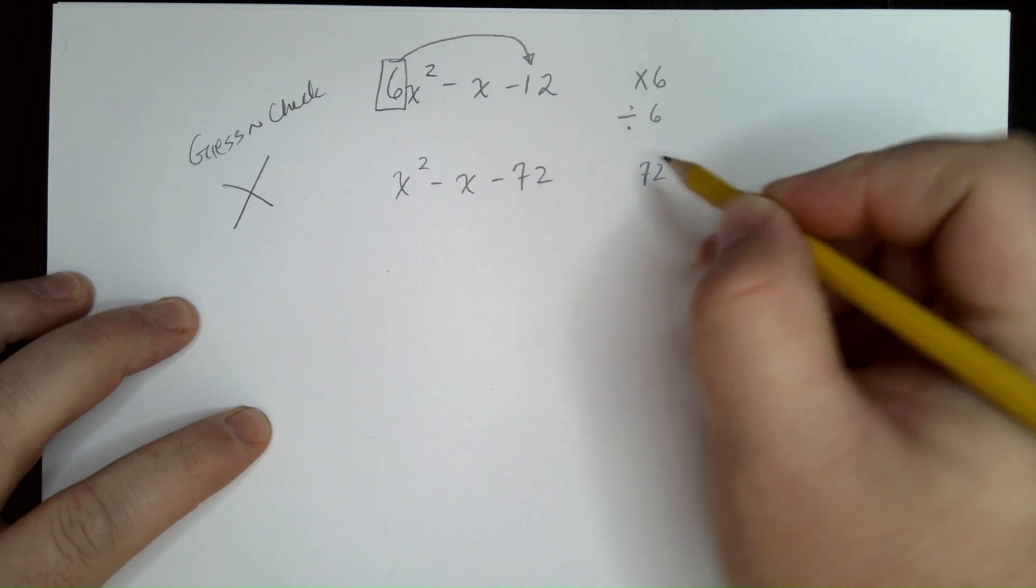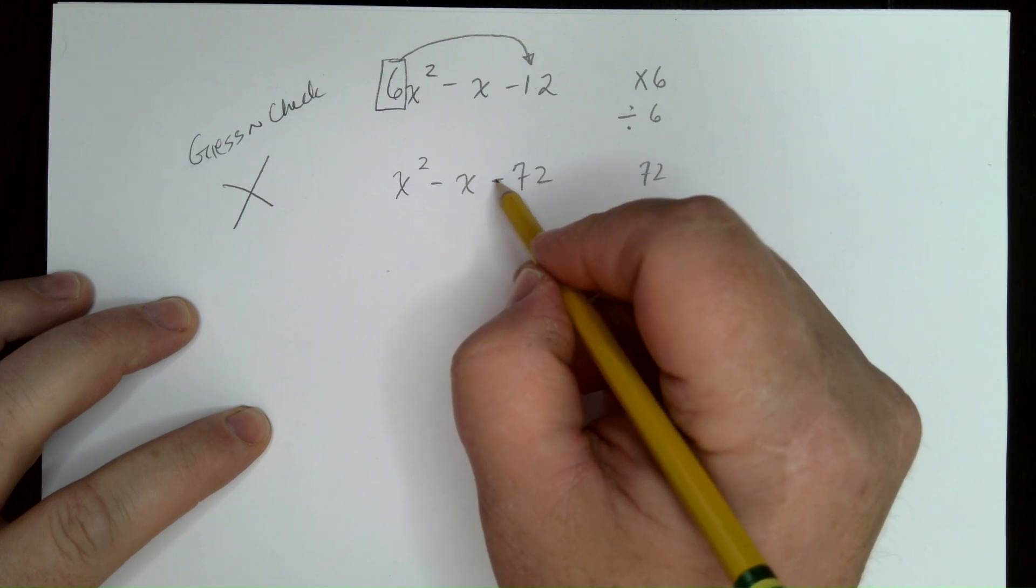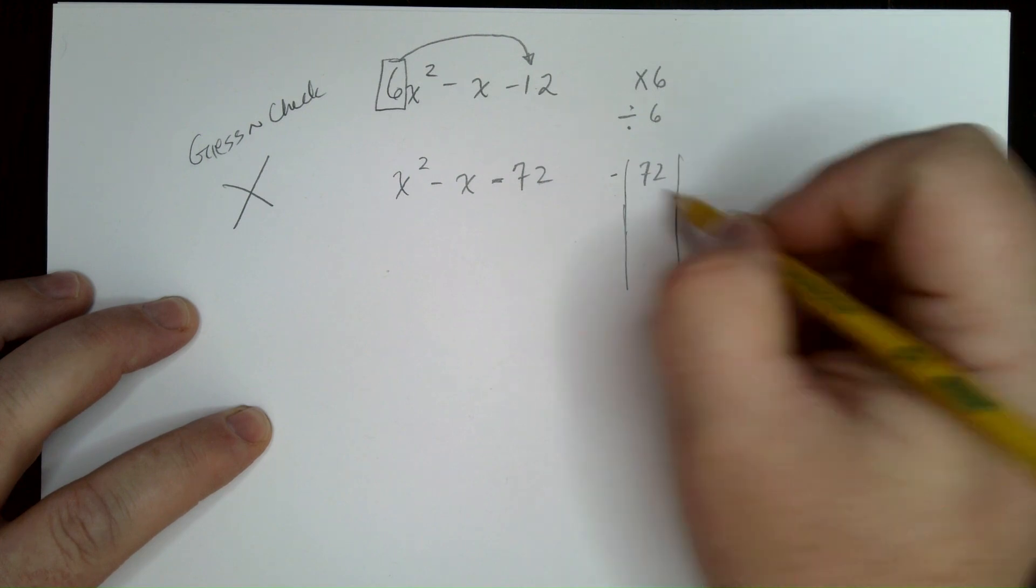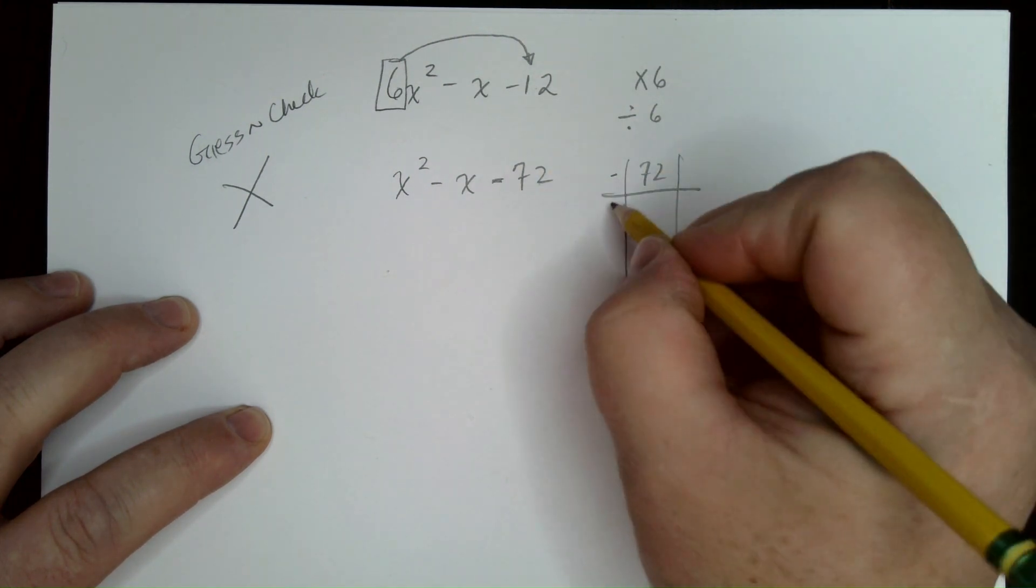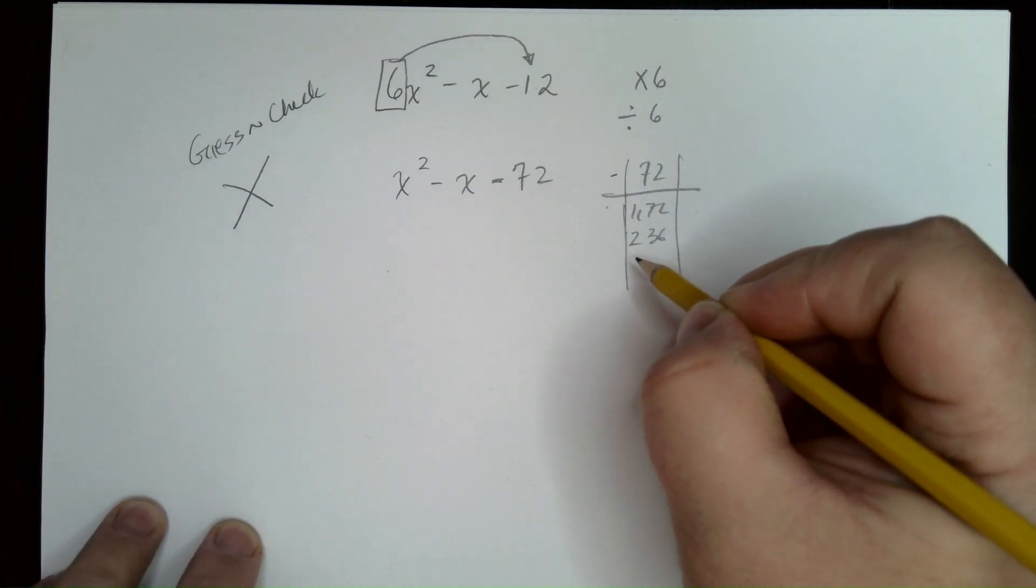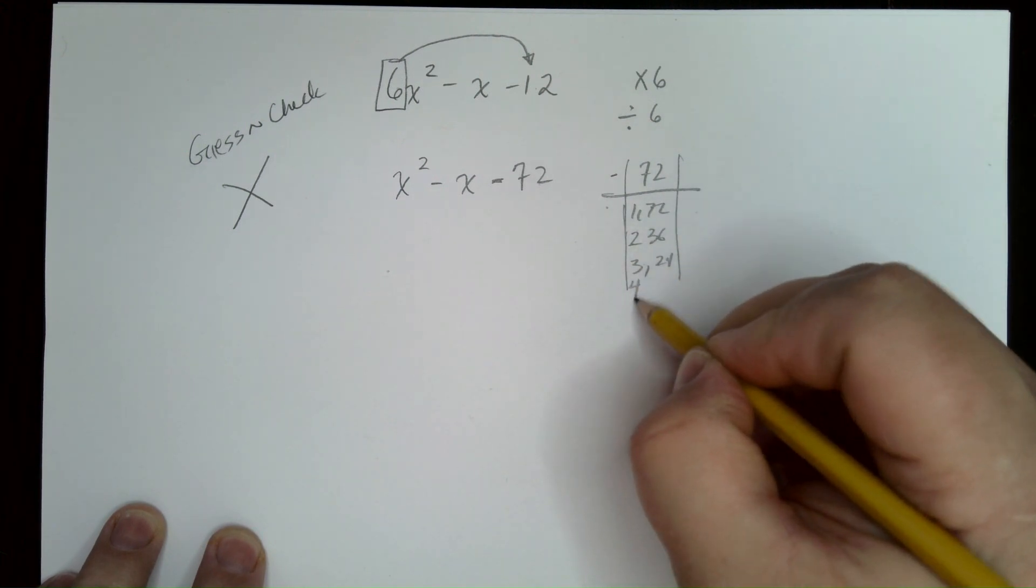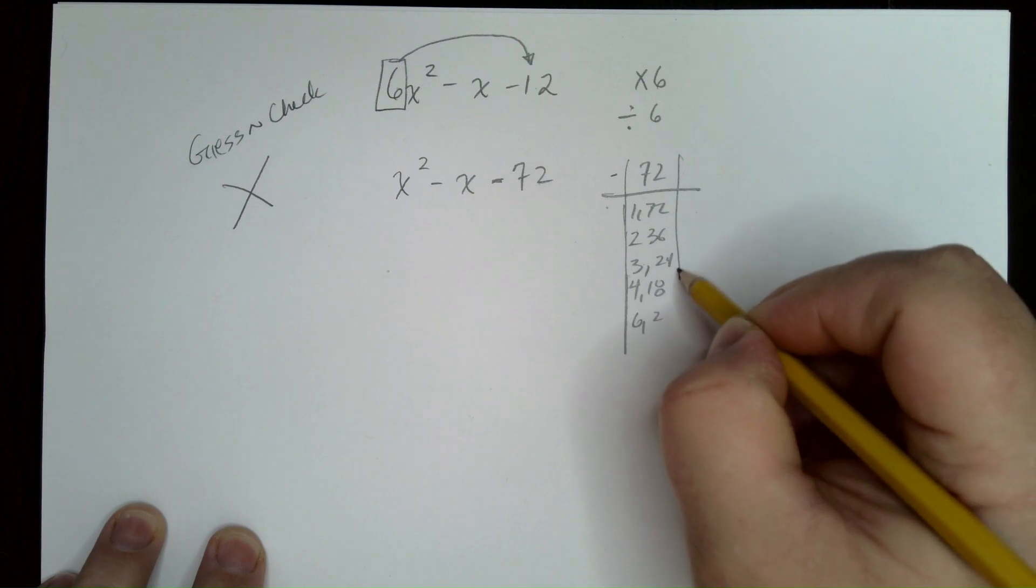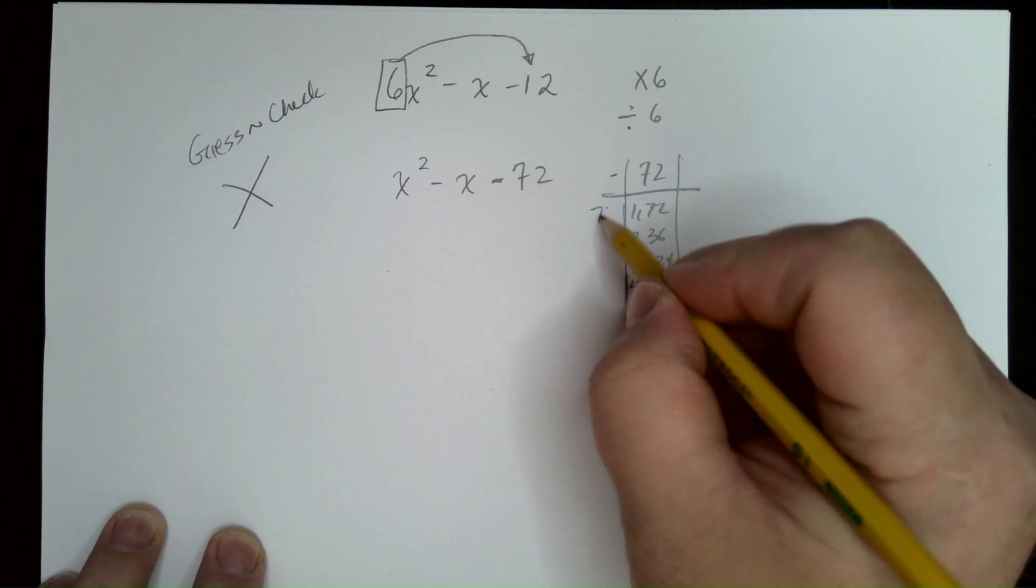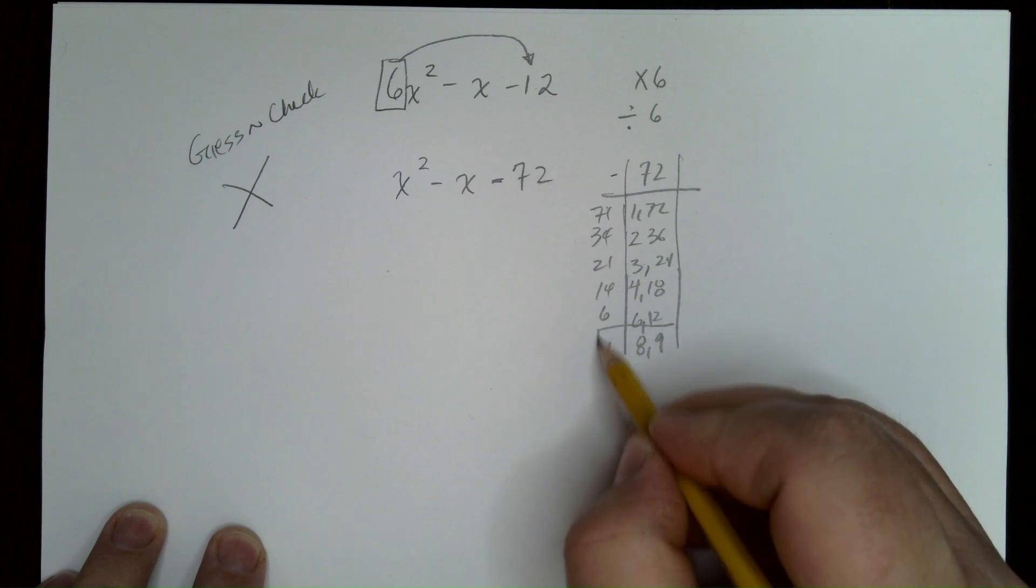Now, if you remember, to factor this, we have to figure out what two numbers multiply to 72. And then because this is negative, they're going to subtract to make negative 1. So if you're not sure, maybe you know already off the top of your head it's 8 and 9. But if you're stuck, you go ahead and you just write all the factors, right? 2 and 36, 3 and 24, 4 and 18, 6 and 12, and the last is, of course, 8 and 9. Now, we subtract them. 71, 34, 21, 14, 6, and 1. This is, of course, what we're looking for.